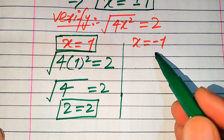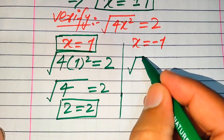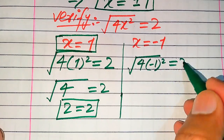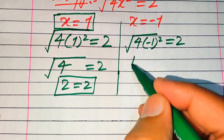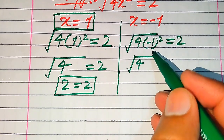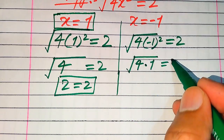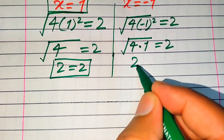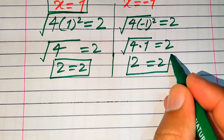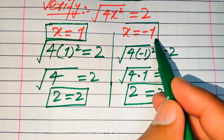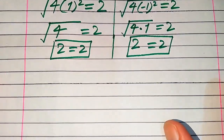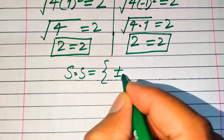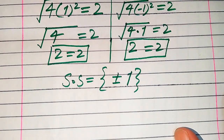In the next step we verify the second root. We substitute x equals negative 1 into the left hand side: the square root of 4 times (−1) squared equals 2. When we square a negative term it becomes positive, so this becomes the square root of 4 equals 2, which is 2 equals 2. This shows that x equals −1 also satisfies the equation, so the solution set is x equals plus or minus 1.